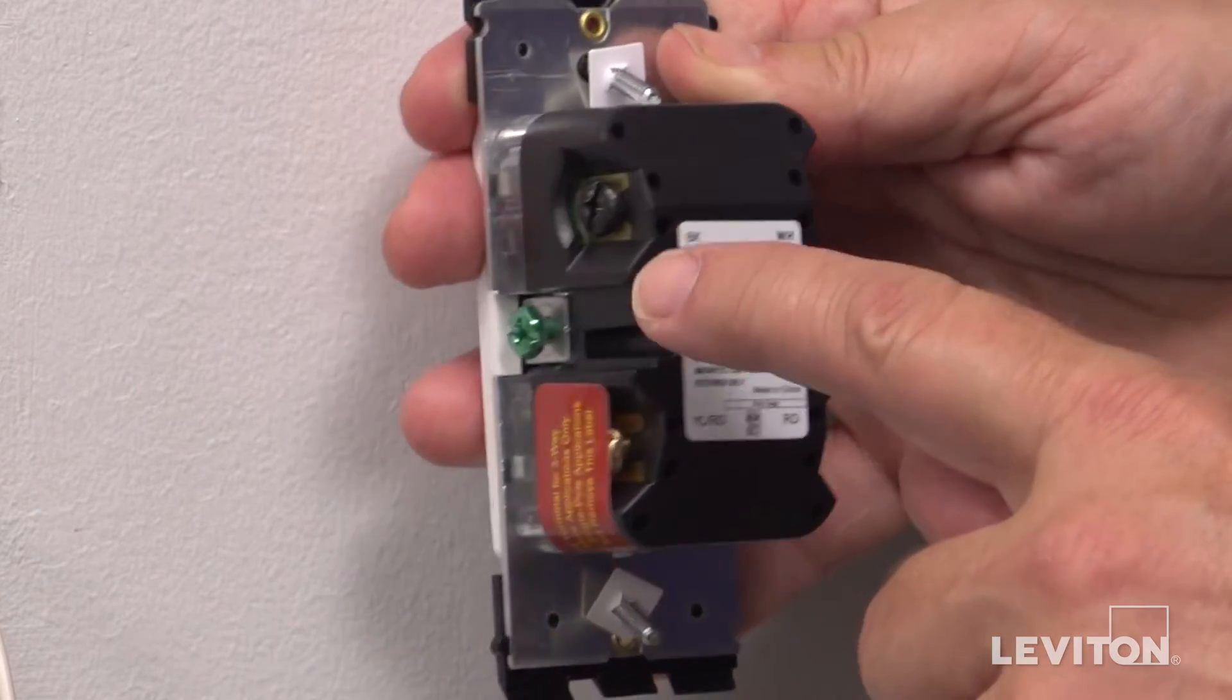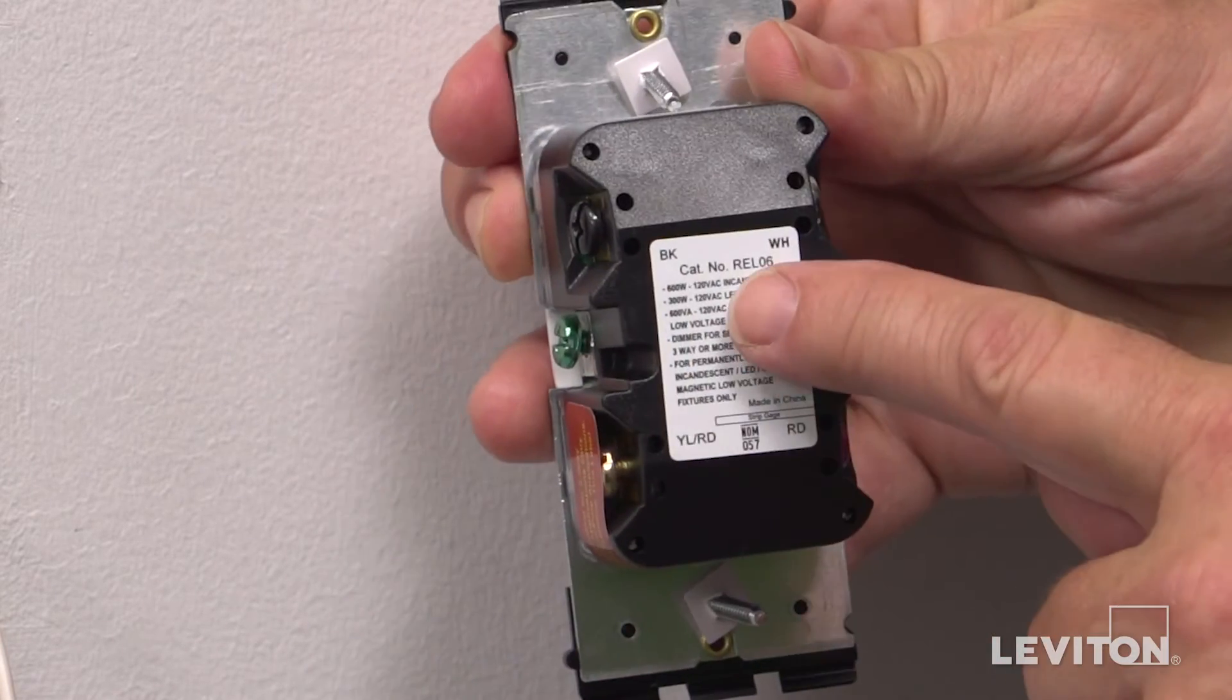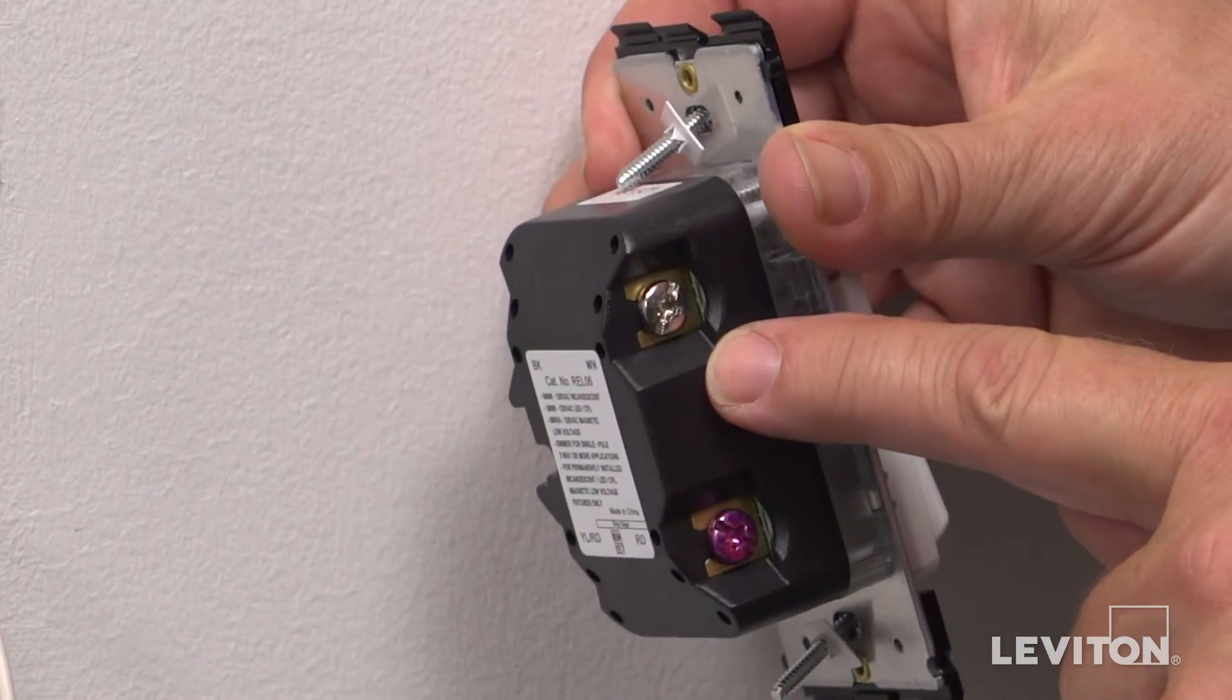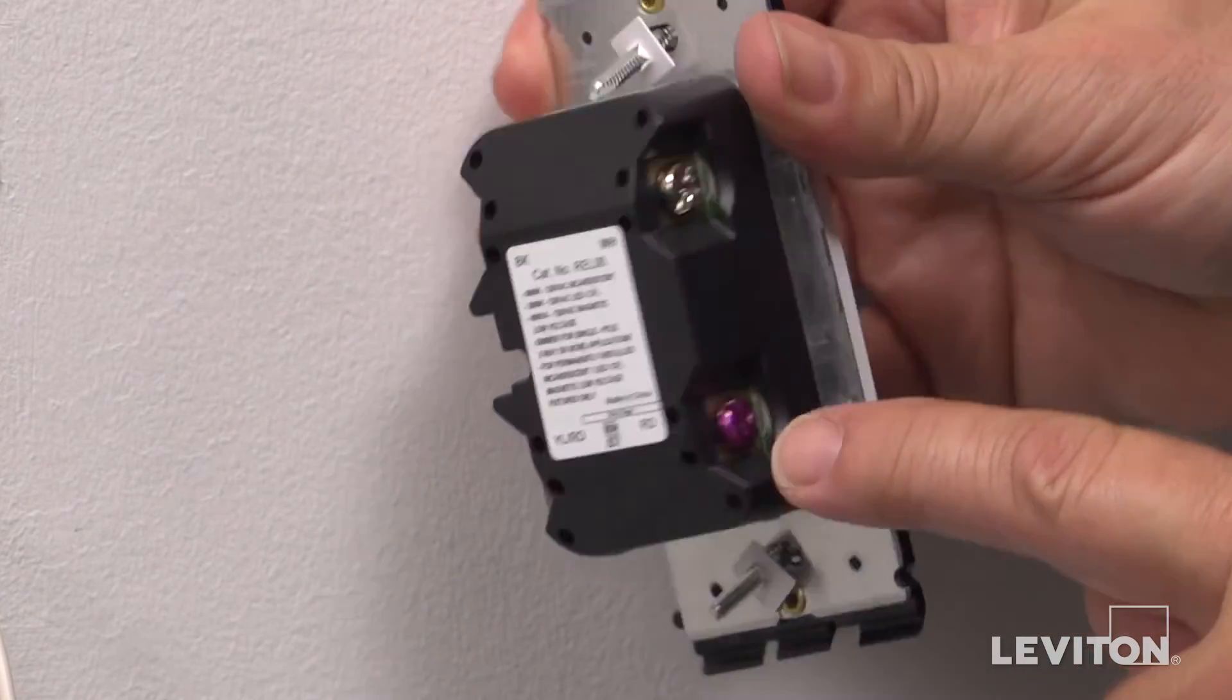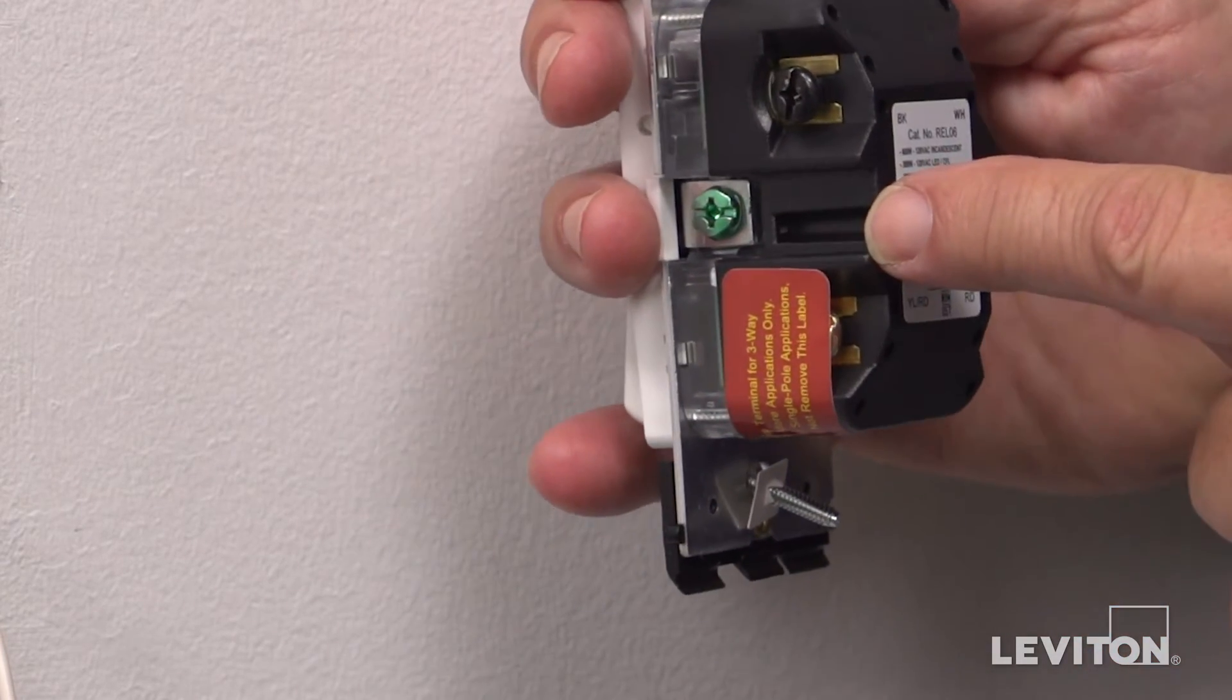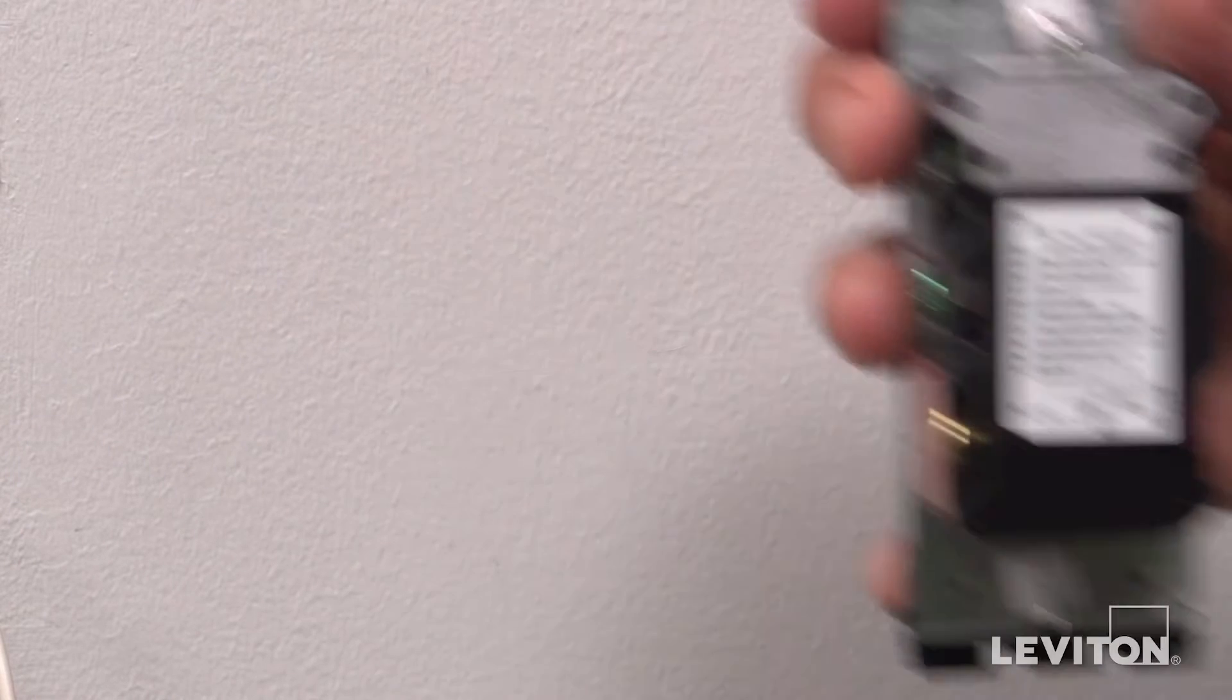The black or BK is for the line or hot wire. The silver or WH terminal is for the neutral wire. The red or RD terminal is for the load and the green terminal is for the ground wire.